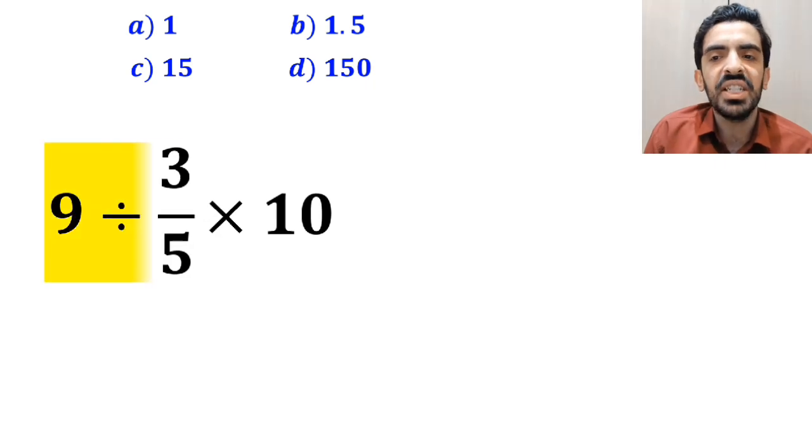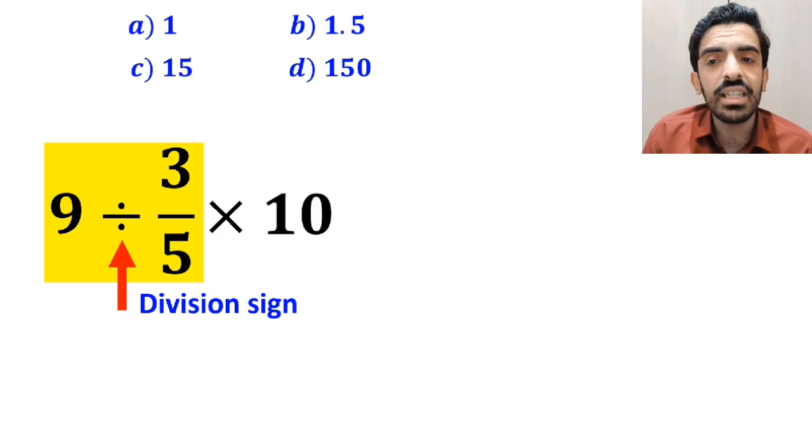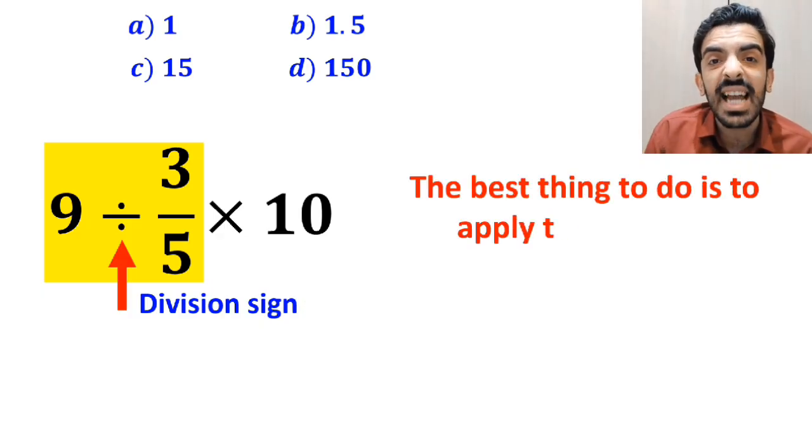So, we'll start with the expression 9 divided by 3 over 5. Okay, whenever we see a division sign between two terms, the best thing to do is to apply the KCF rule.